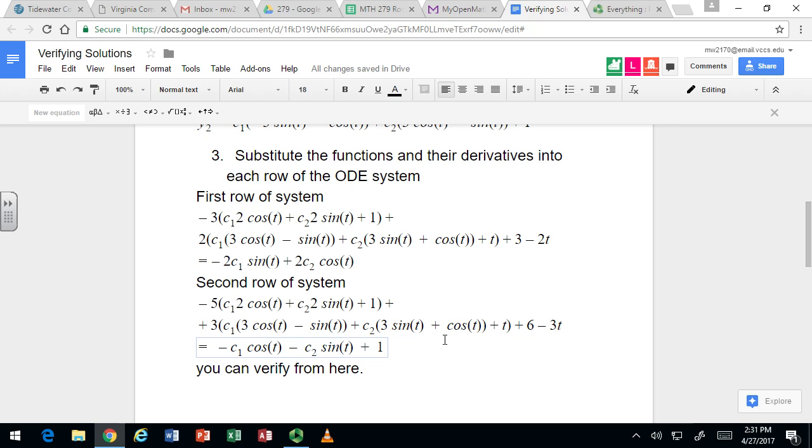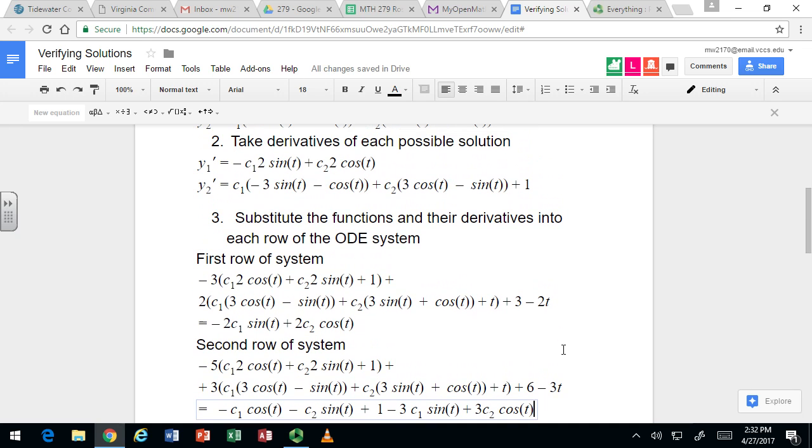It still leaves the c1 sine term and the c2 cosine term. And you're going to have negative 3 c1 sine t. All right, so we've got 3 times c1 times negative sine, and then we've got 3 times c2 times cosine, 3c2.